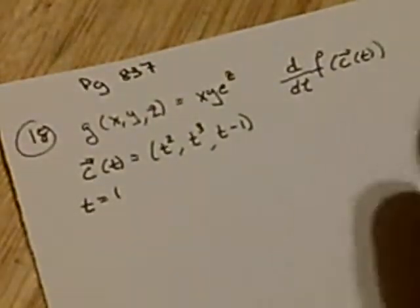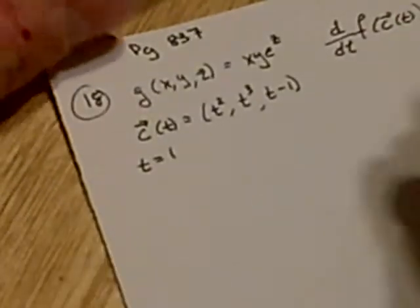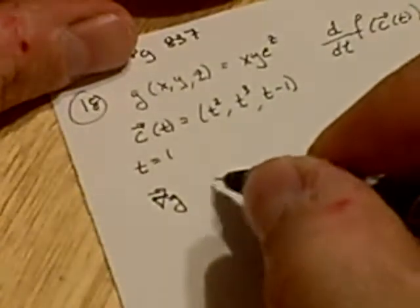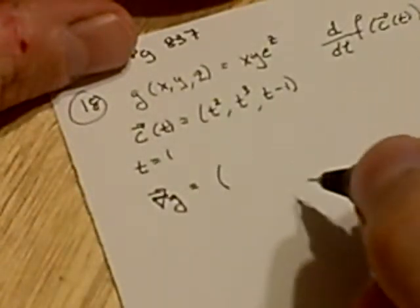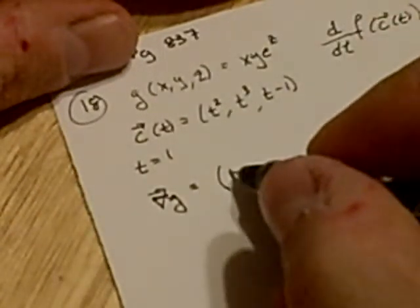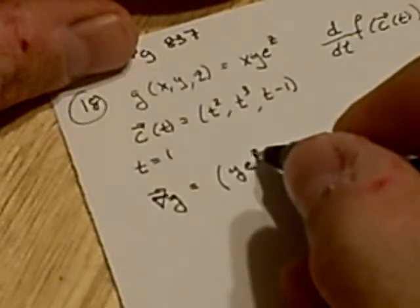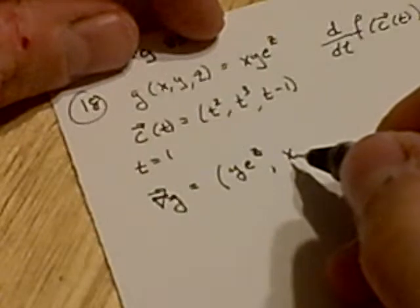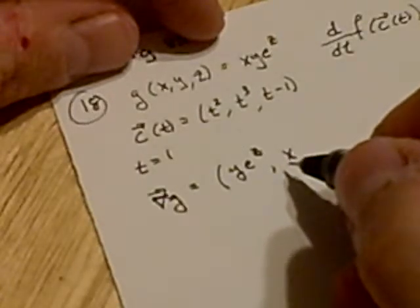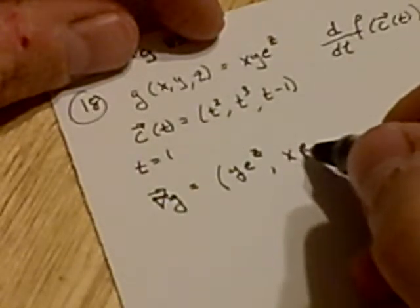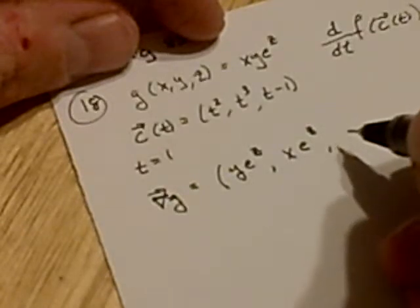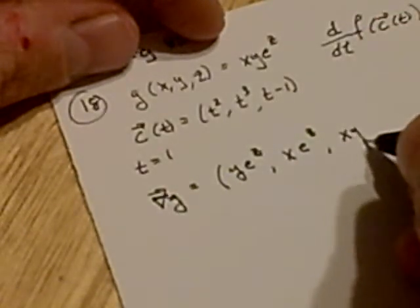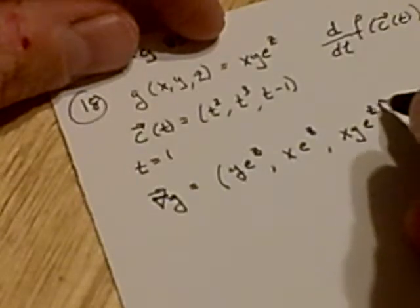Alright, so let's go ahead and work that out. Let's get the gradient of g. The partial of g with respect to x is y e to the z. The partial of g with respect to y is x e to the z. And finally, the partial of g with respect to z is x y e to the z.